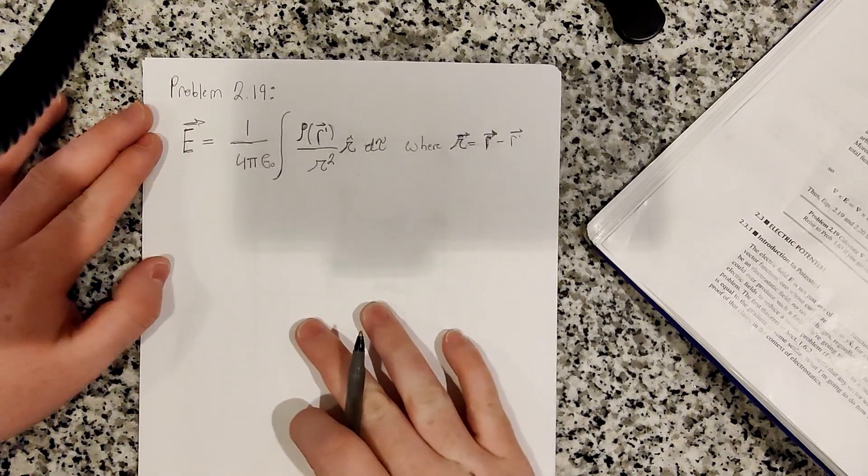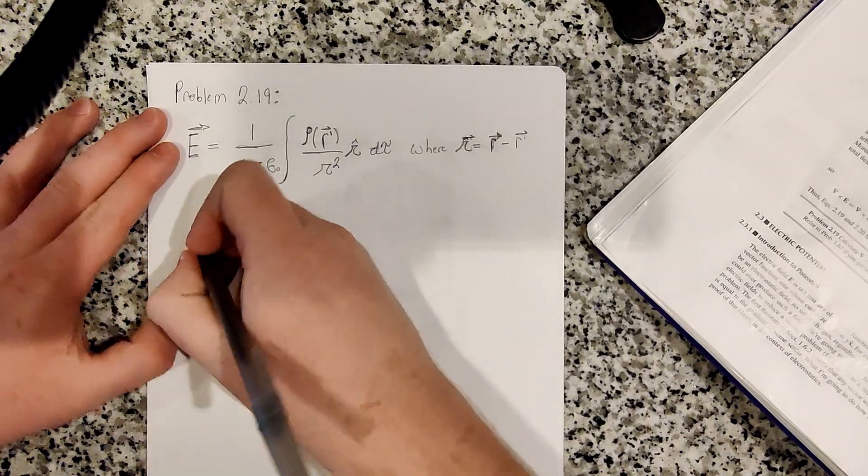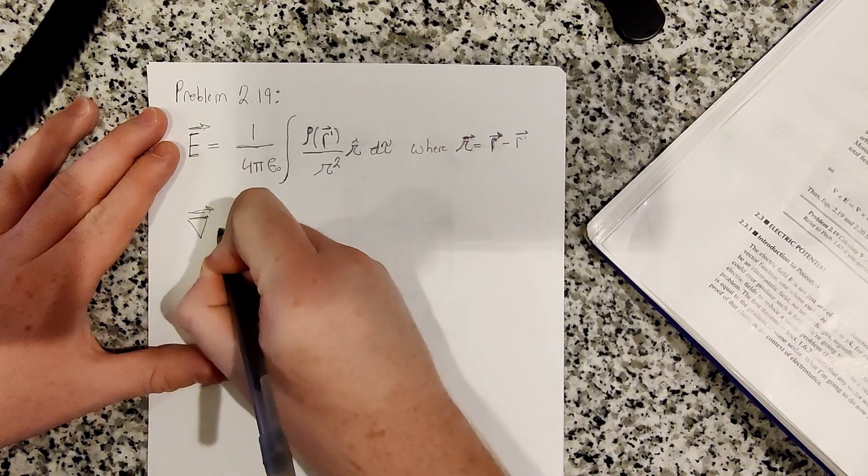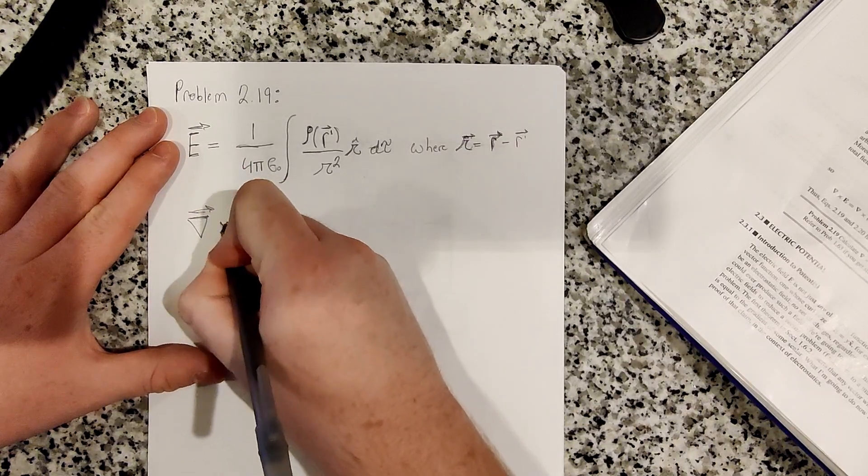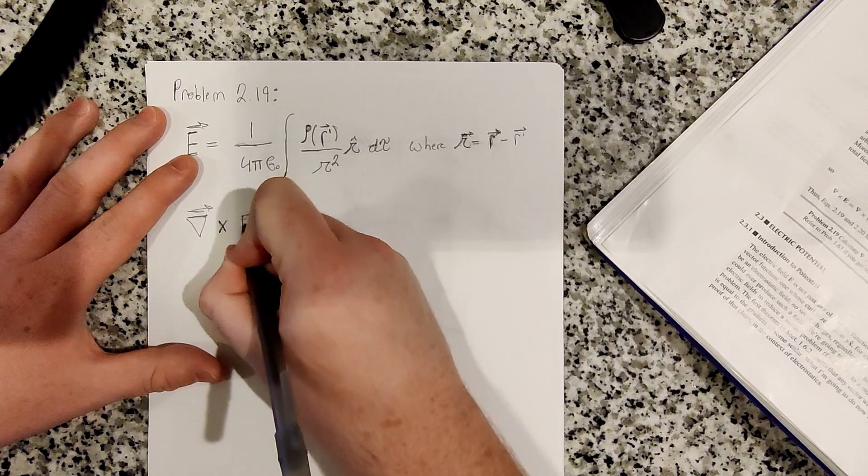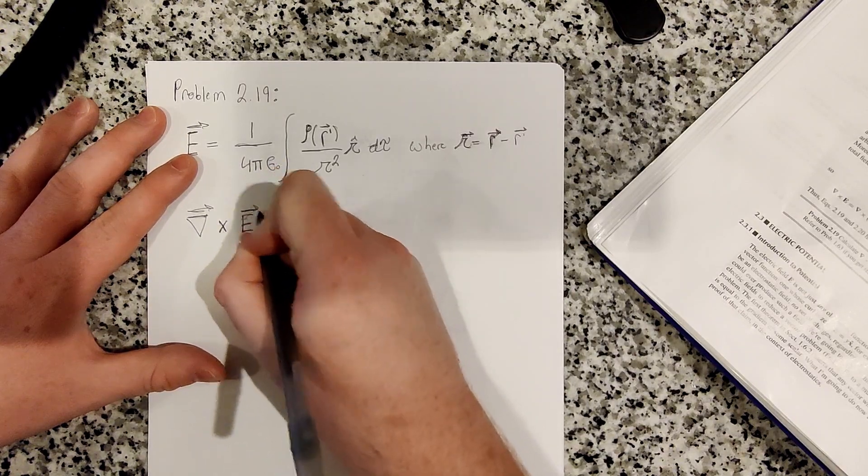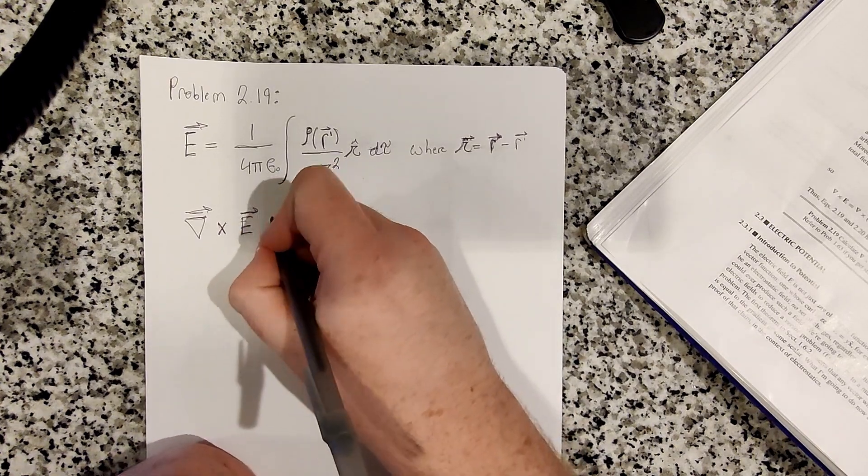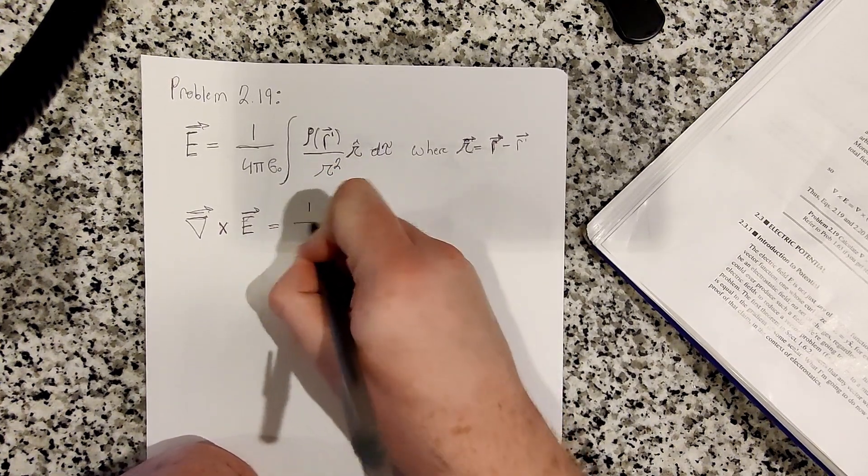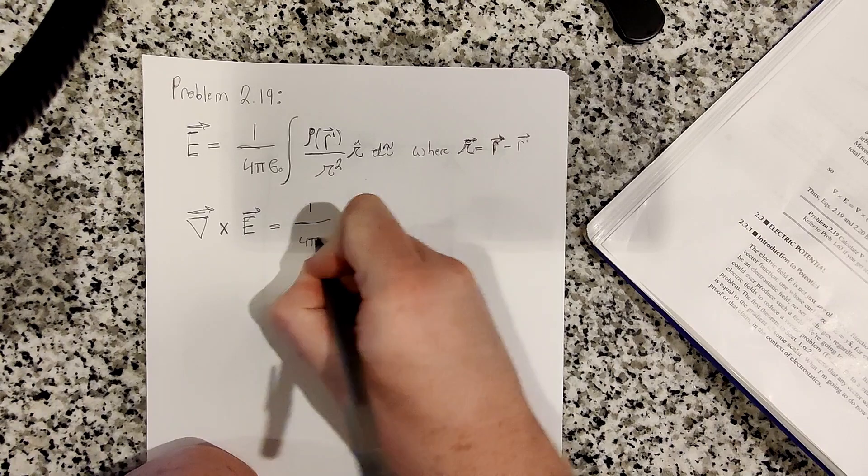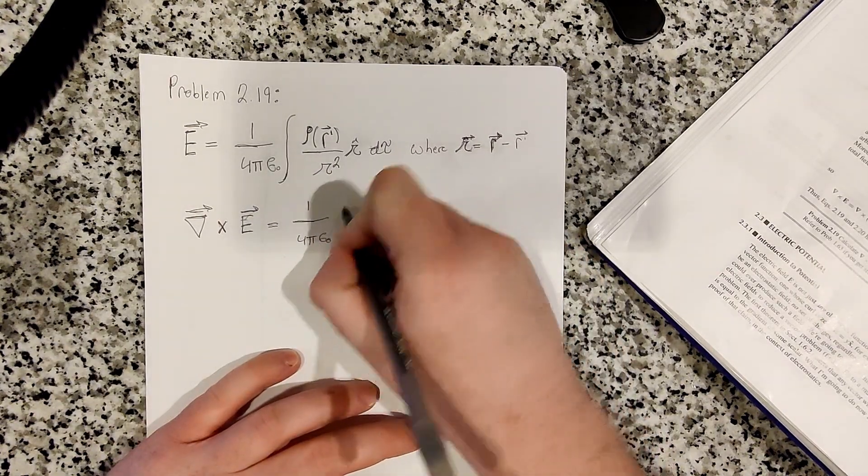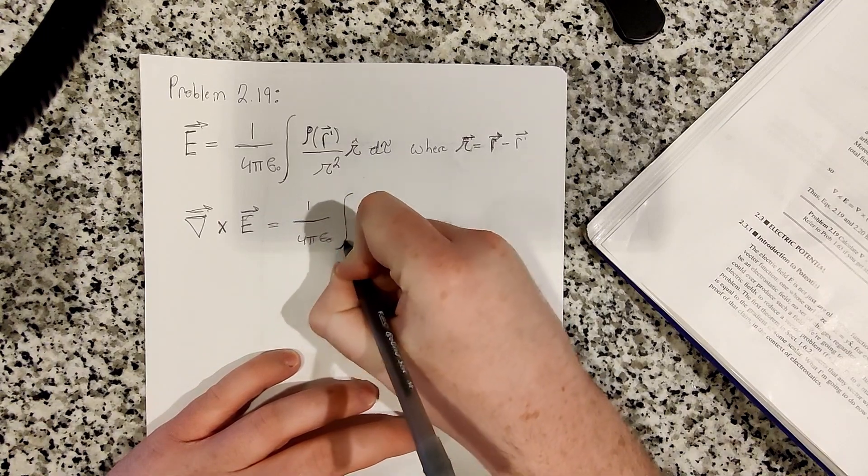So real quick, let's just calculate the curl. So the curl of this electric field, which is a function of space. The curl is a function of space, so it'd be a function of r. So we can pull out 1 over 4 pi epsilon 0. The curl doesn't apply to that, it's just constants. We can pull the curl into the integral.